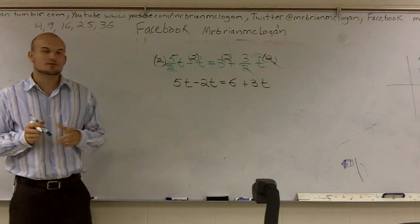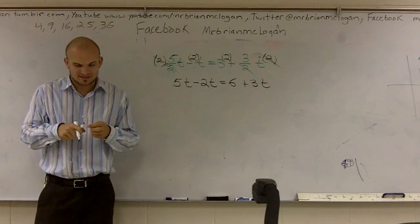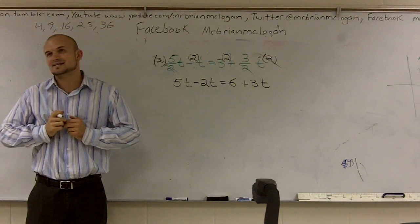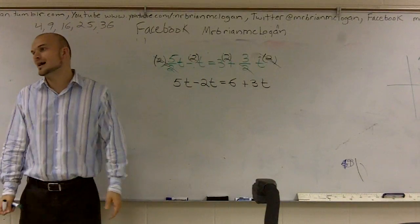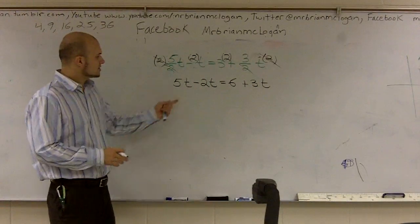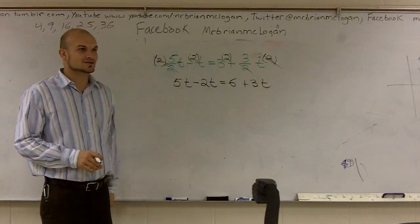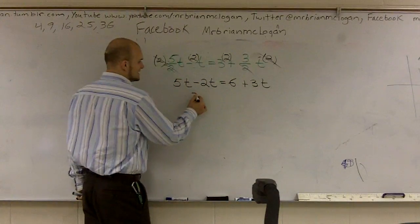Now it's much easier for me to combine like terms, because fractions, nobody likes adding subtractive fractions. They have to do the common multiple. It just gets tedious. So, but here it's easy. 5t minus 2t is going to equal 3t.